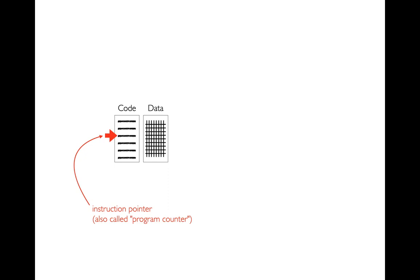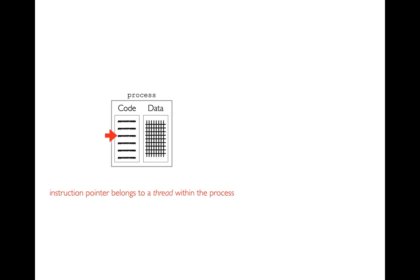As far as we've been concerned, there's always been one instruction pointer — but that's going to change. The code and data are bundled together in something called a process, and within that process the instruction pointer belongs to a thread. We've never seen an example where we don't have exactly one process and one thread. It might seem like the instruction pointer is tied to the process, but going forward we may see cases where there are multiple threads inside a single process.